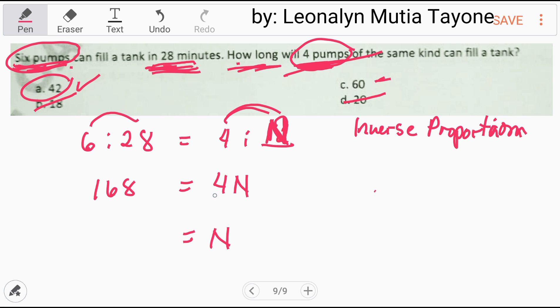Then i-isolate natin si N dito. So itong four, pang multiply sa N, pang divide siya sa 168 natin. So 168 divided by four and that is 42. Kaya 42 ang sagot dito.